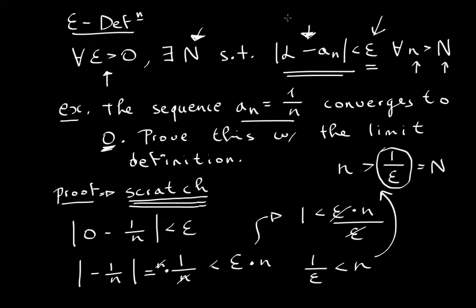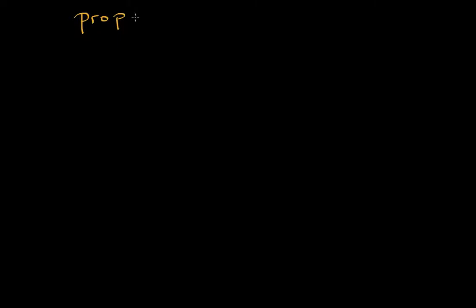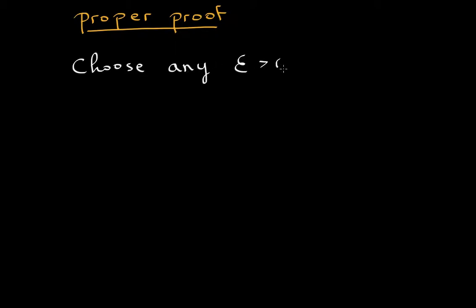Your job is to start from the definition and find the value of your big N — that's your duty. You let them choose their epsilon and you tell them what big N this will work for. So this is how you write your proper proof. You say: choose any epsilon greater than zero, then take N to be 1 divided by epsilon.